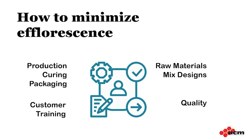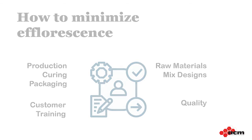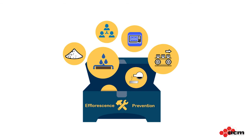It takes a combination of factors to cause efflorescence, and it follows that to minimize efflorescence, we need to take a good hard look at everything we do. This can include raw materials, mix design, as well as how we manufacture, cure, and package our products. Look out for a dedicated video on that in the future. For now, we'll talk about efflorescence controlling admixtures, or ECAs, which are a vital part of our efflorescence toolkit.